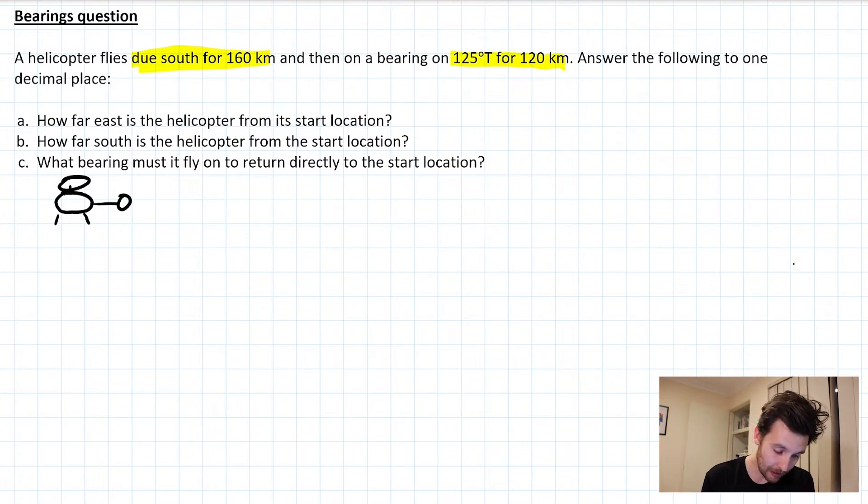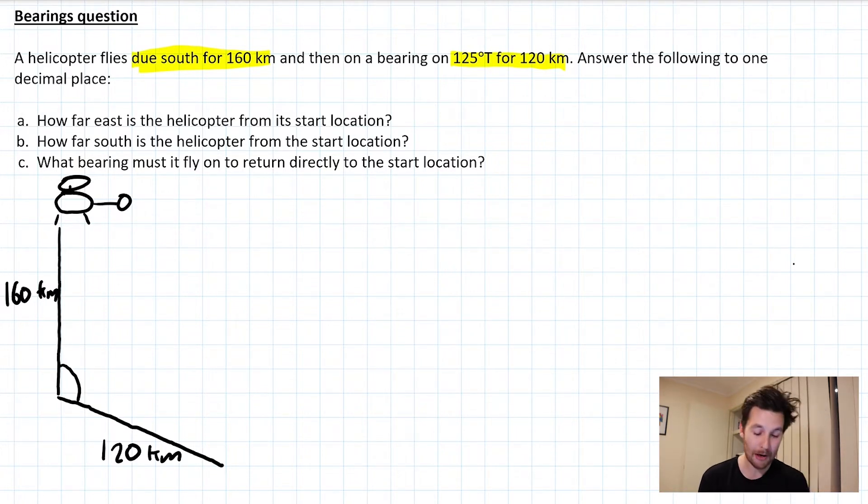So I've got a helicopter right there, very skillfully drawn, that's going to fly south for 160 km and then it's going to fly on a bearing of 125° for another 120 km. So let's say something like that. I'll add my bearing in as well. Because we're measuring it from the vertical, I'm going to say that's 125°.